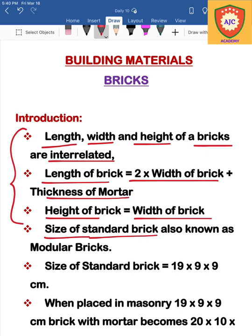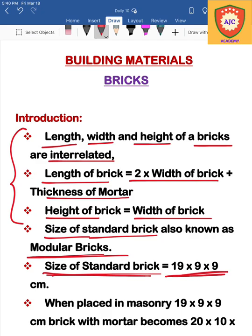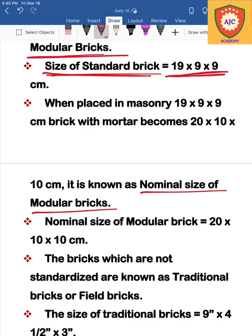Next, standard brick size. We will talk about the modular brick. The standard or modular brick size is 19×9×9 cm. That is the actual size. The nominal size of the modular brick is 20×10×10 cm.